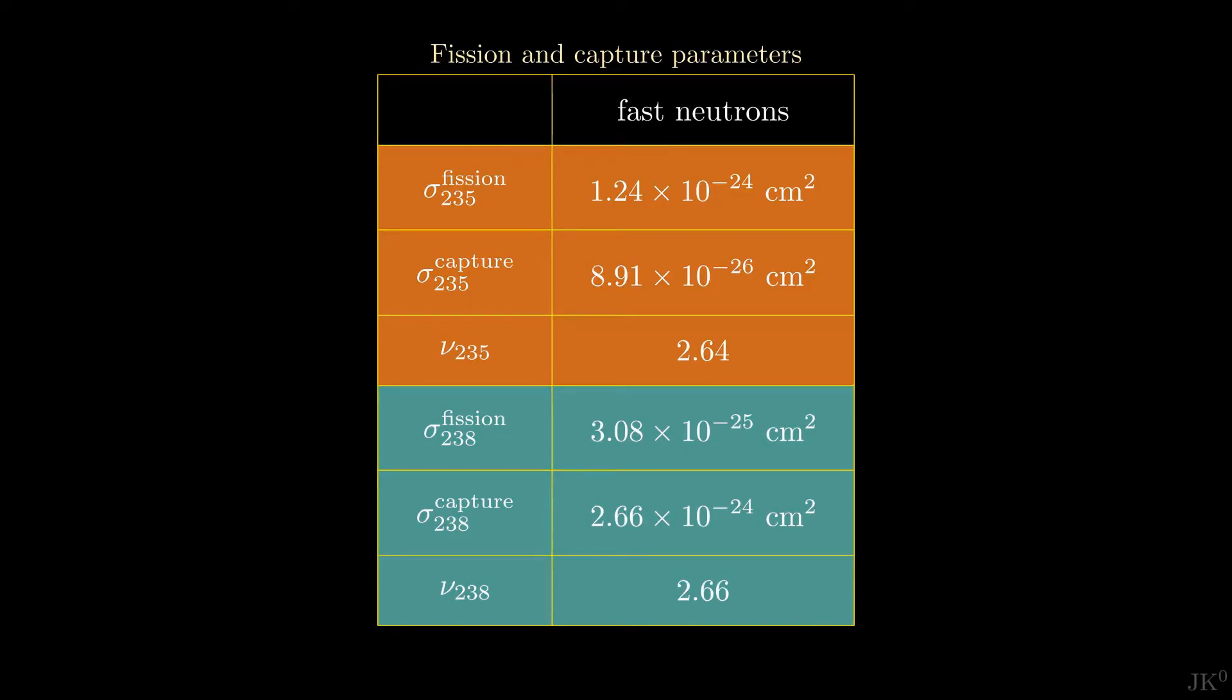The two relevant isotopes of uranium have their own cross section and average secondary neutrons. Therefore, we have six relevant numbers: fission cross section and capture cross section for both U238 and U235, and their corresponding number of average secondary neutrons produced by fission. All these quantities are experimentally measured. Which of the two isotopes is more relevant depends on the values of these six quantities but also on the abundance of each isotope.